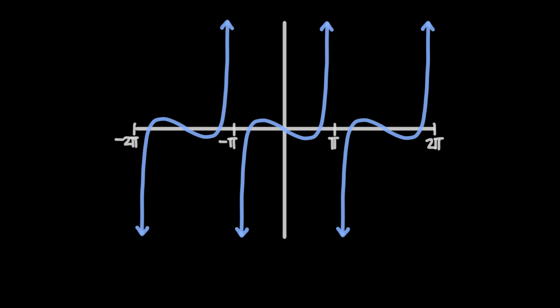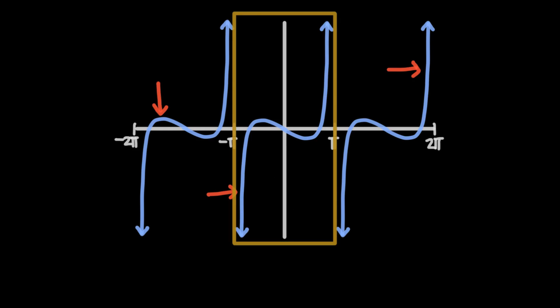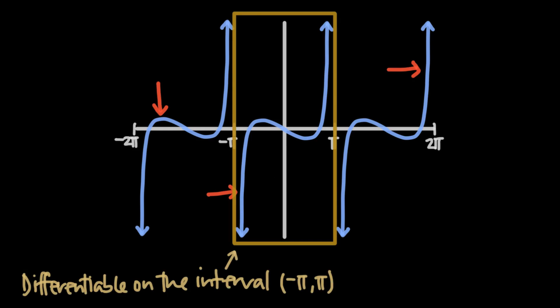Sometimes a function is definitely non-differentiable, like this one, which has periodic discontinuities, but we can still say that it is differentiable at a few points. We can even say that it is differentiable on an entire interval, as long as the function is continuous along that interval and the graph does not include any vertical tangents or cusps. We have to be careful when talking about these intervals and always define whether the endpoints of the interval are included in the differentiability we are testing.